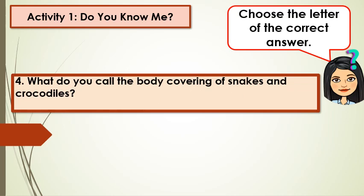Number 4: What do you call the body covering of snakes and crocodiles? A. Shell, B. Fur, C. Scales, D. Feather.